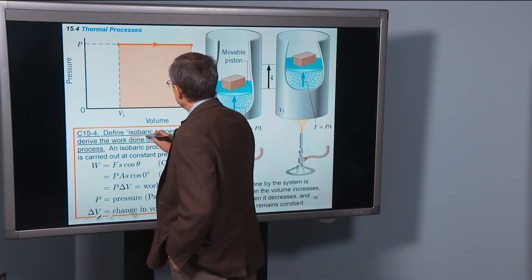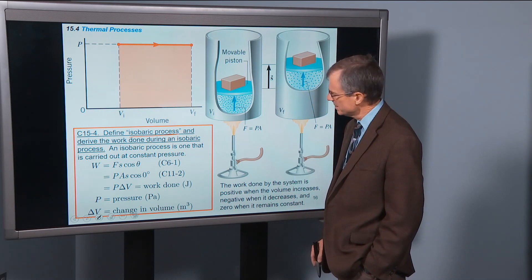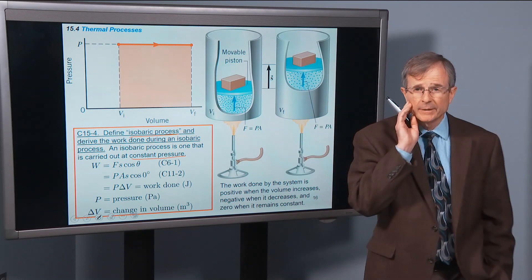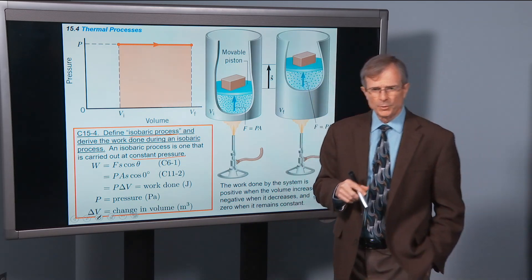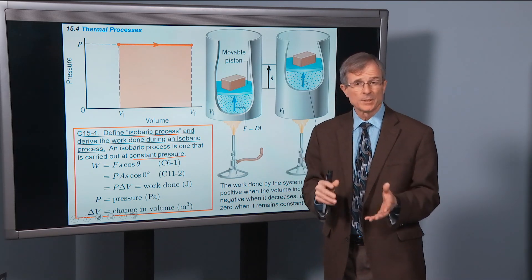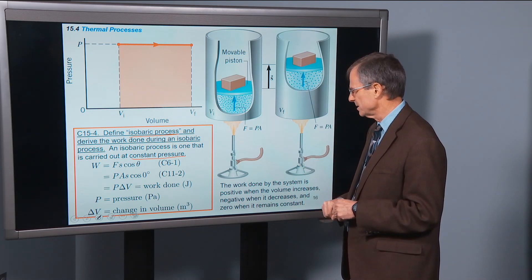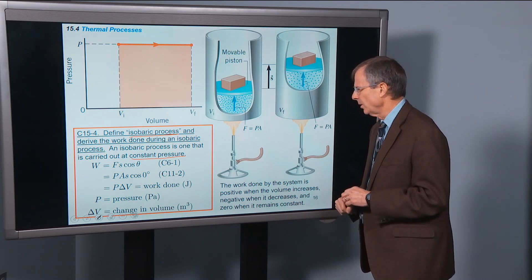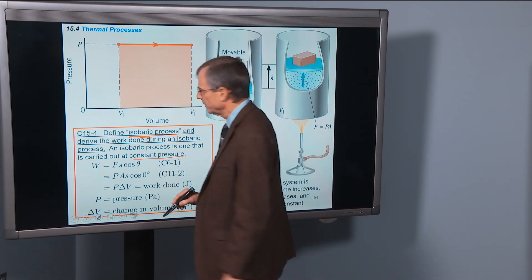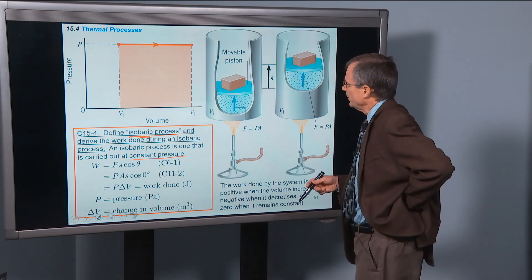Let's talk first about an isobaric process — define it and derive the work done during an isobaric process. An isobaric process is one that is carried out at constant pressure. We already talked about applying the ideal gas law to processes with constant pressure, constant volume, etc. That concept still applies here. We're interested in a process carried out at constant pressure. Iso means same, bar means pressure, so it just means same pressure.